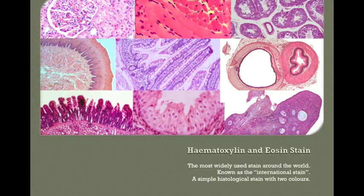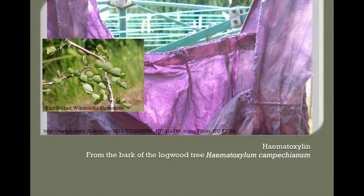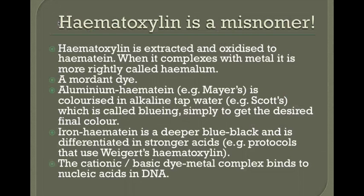Hematoxylin is purple and comes from the bark of the logwood tree in Latin America. The name is a bit of a misnomer: hematoxylin is the chemical extracted from the logwood tree, which is then oxidized to form hematin. When it complexes with a metal — because it's a mordant dye — it is more correctly called hemalum, though we commonly call it hematoxylin in the lab.